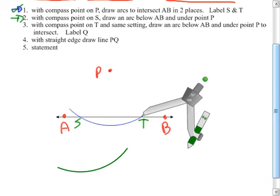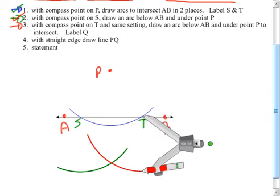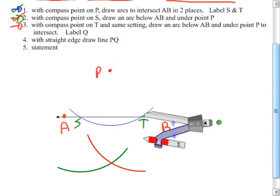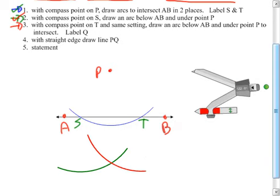Now we're going to do number three. With compass point on T, same settings, draw an arc below AB and under point P.